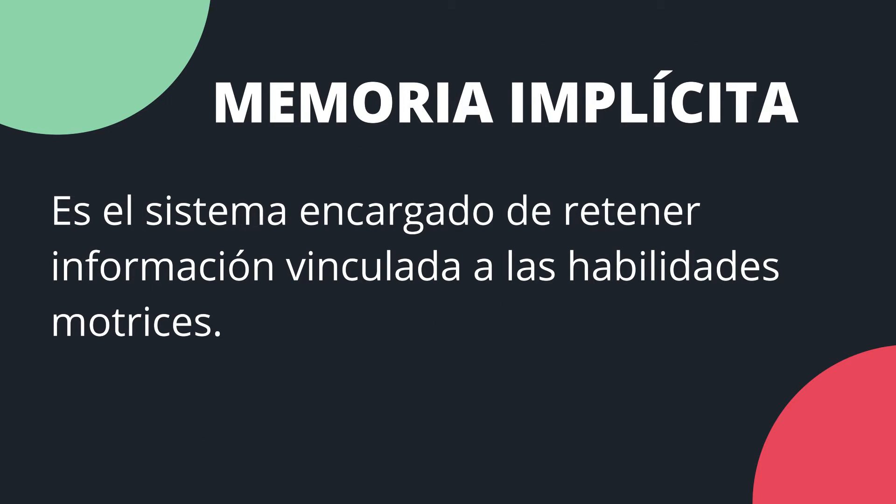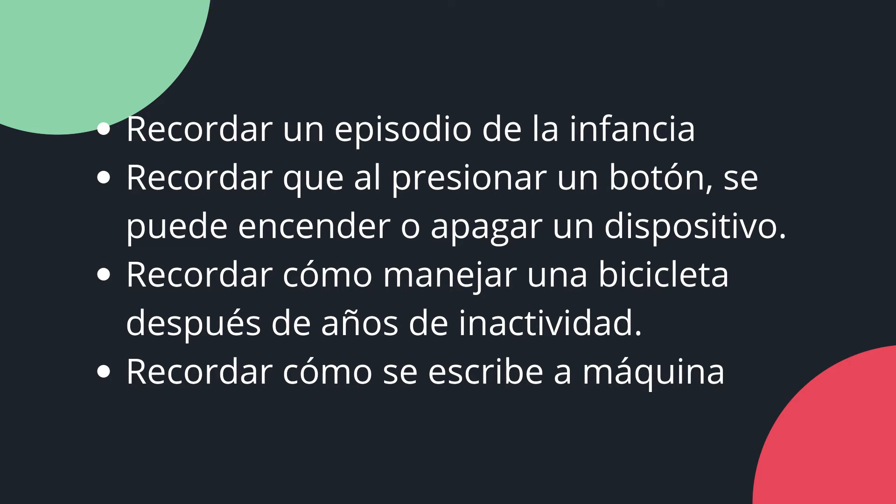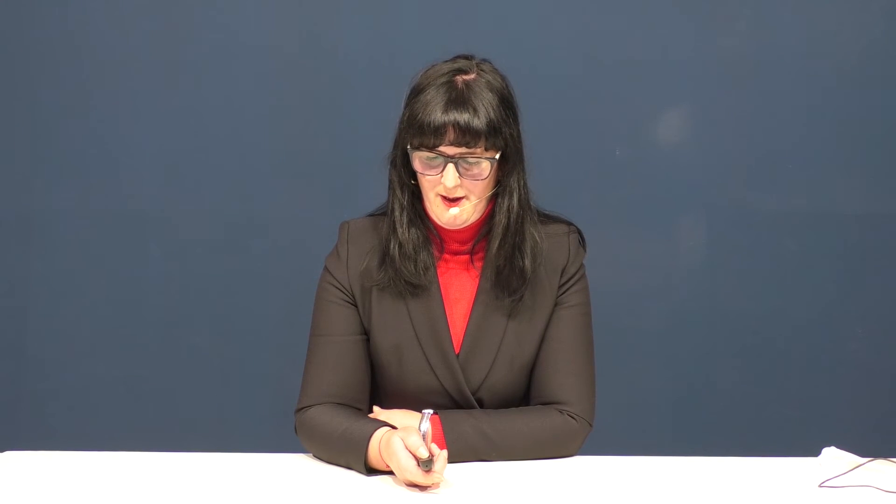Y la memoria implícita, dentro de la memoria a largo plazo, sería el sistema encargado de retener información vinculada a las habilidades motrices. Ejemplos de memoria a largo plazo serían: recordar un episodio de la infancia, recordar que al presionar un botón se puede encender o apagar un dispositivo, recordar cómo manejar una bicicleta después de años de inactividad, y recordar cómo se escribe a máquina. Podemos aprender a escribir a máquina con 12 o 13 años, dejar un tiempo muy largo sin hacer esa actividad, y de repente, cuando volvemos a retomarla, nos damos cuenta de que continuamos sabiendo hacerlo.